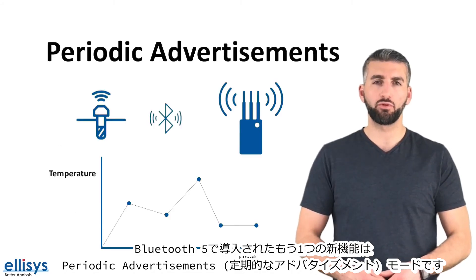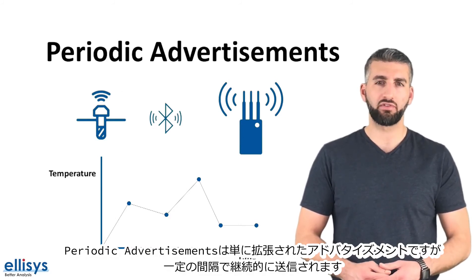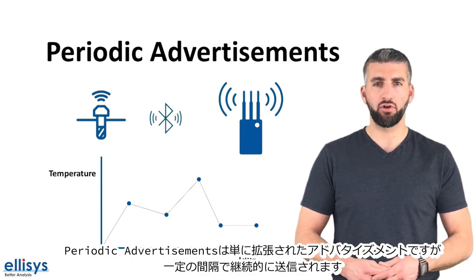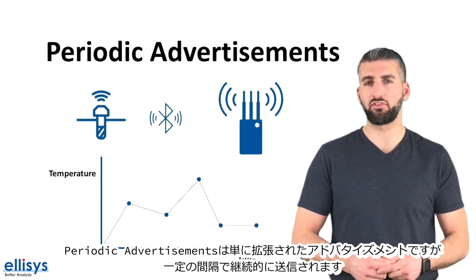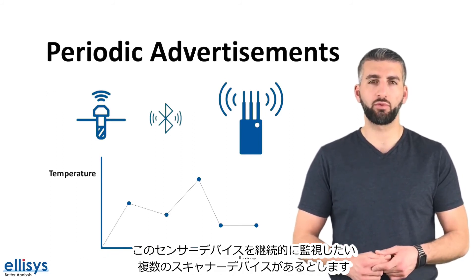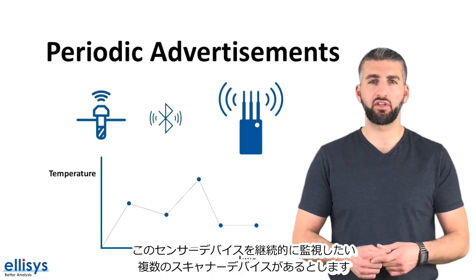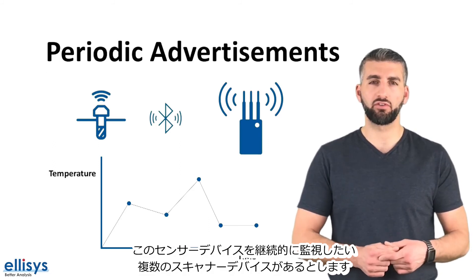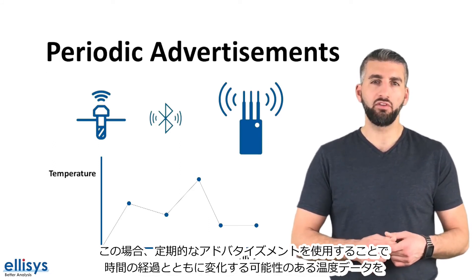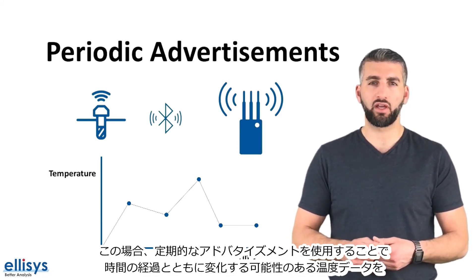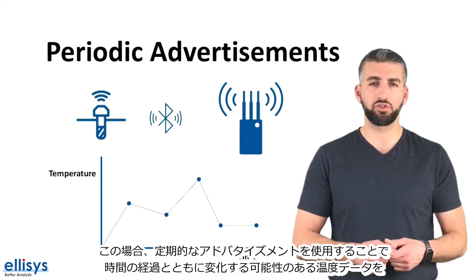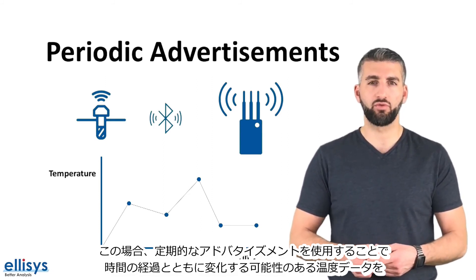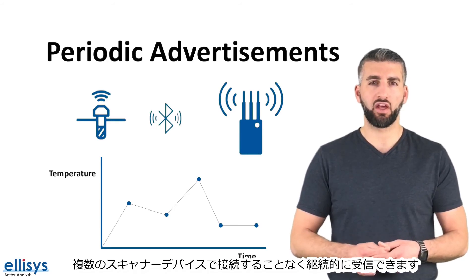Another new feature introduced in Bluetooth 5 is the periodic advertising mode. Periodic advertisements are simply extended advertisements but sent out continuously at a fixed interval. For example, think of a use case where we have a sensor device gathering data and multiple scanner devices that need to continuously monitor it. In this case, we can use periodic advertisements to continuously send out data such as temperature readings that change over time to these multiple scanner devices, without having to form a connection between them.